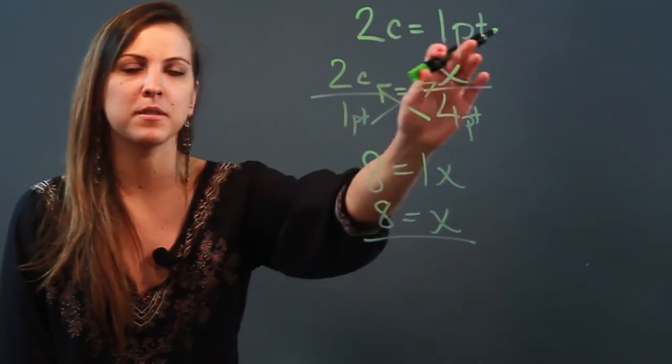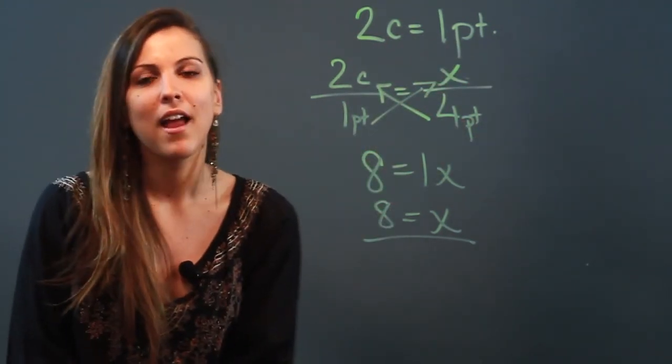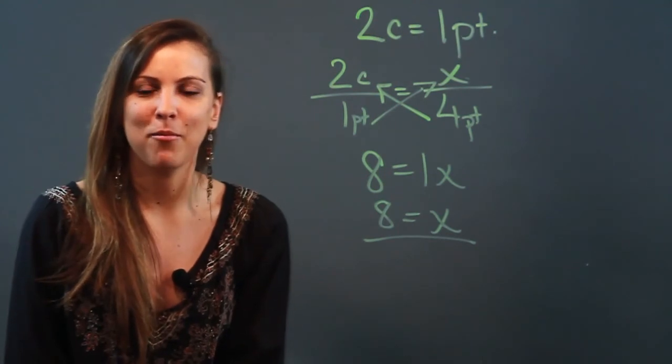So all you have to know is that two cups are in one pint and set up a proportion, and that is how you determine the amount of cups in a given number of pints.